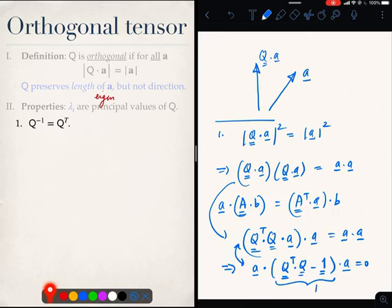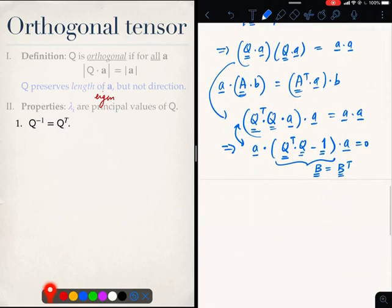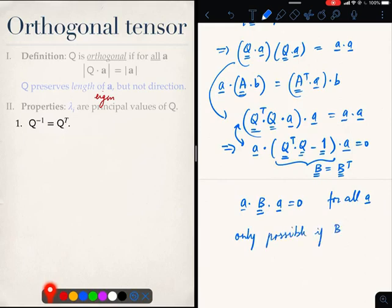I will rearrange this thing to look like A dot Q transpose Q minus identity dot A equals zero. What you see over here is that this is a symmetric tensor. What we have is that A dot B dot A equals zero for all A, and this is only possible if B is zero, which implies that Q transpose dot Q equals 1, which implies that Q inverse is Q transpose. Which is what we set out to prove.